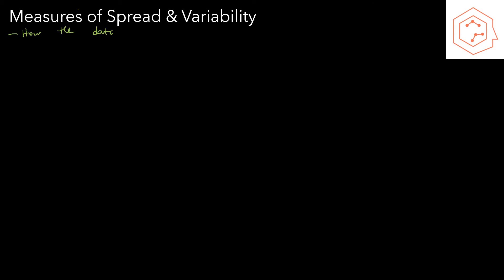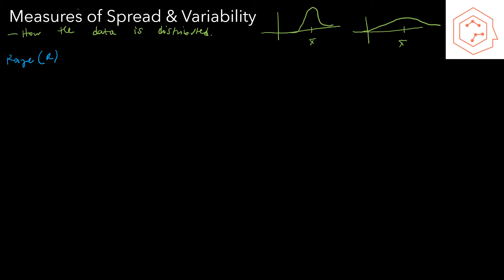Beyond finding the center, we also want to know how the data is distributed around that center. Two distributions can have the same mean but one could be tightly concentrated while the other is spread out. The simplest measure of spread is the range, denoted R, which equals the maximum value minus the minimum value, giving the width of possible values. Returning to our previous example, maximum was 2.0 and minimum was 1.7, so the range is 0.3.